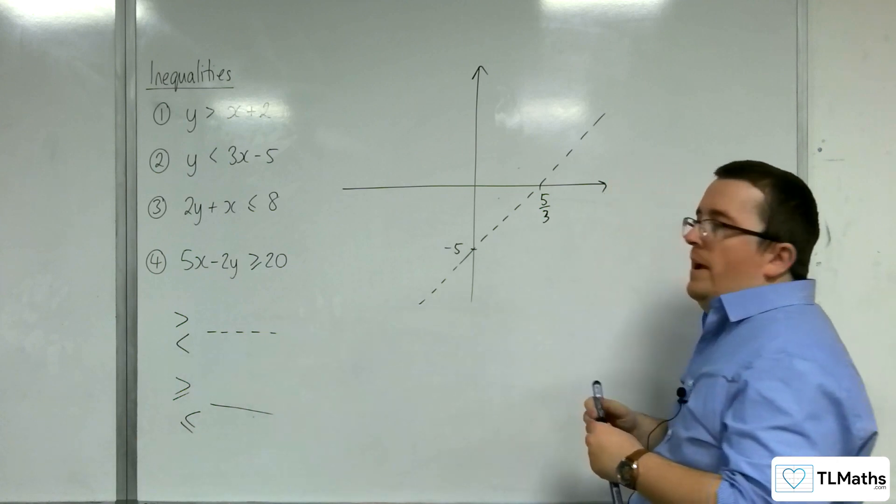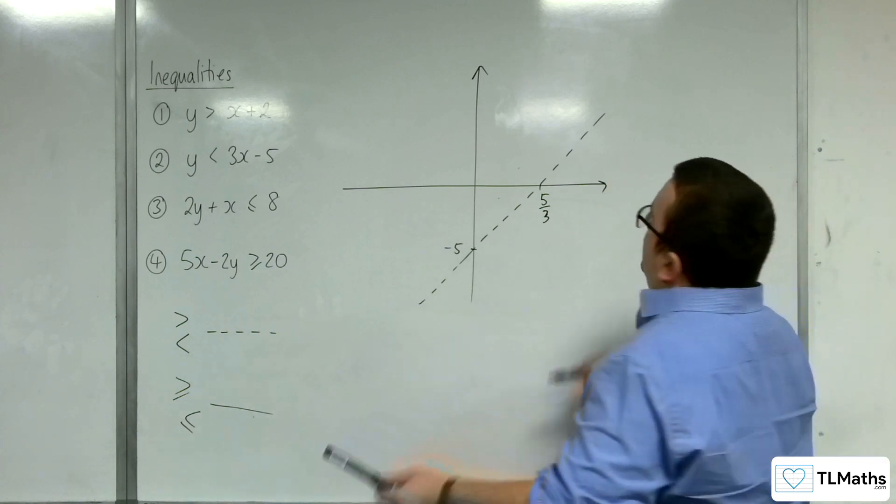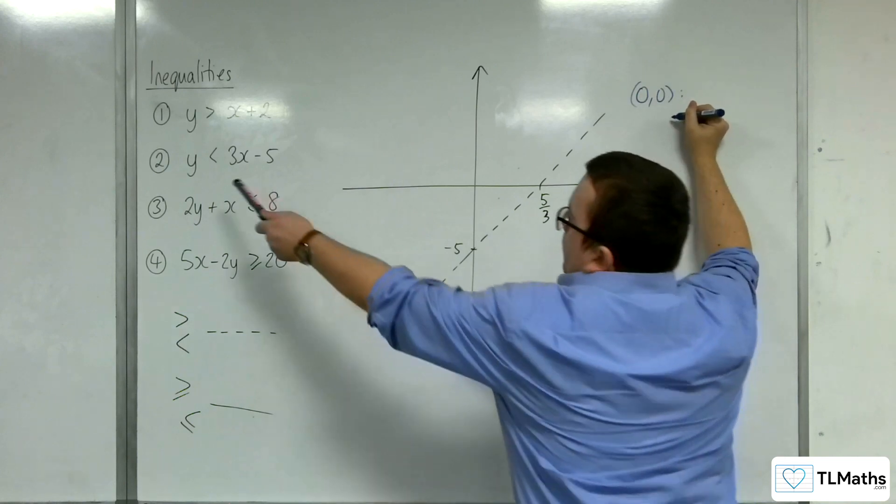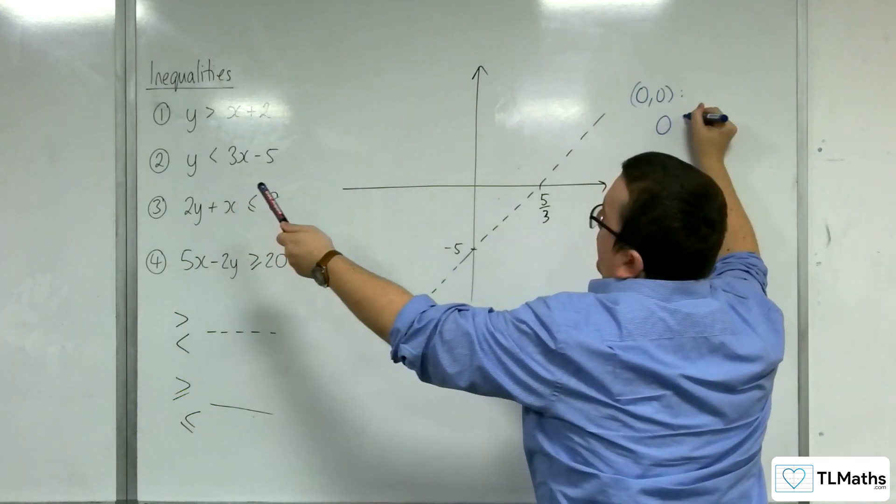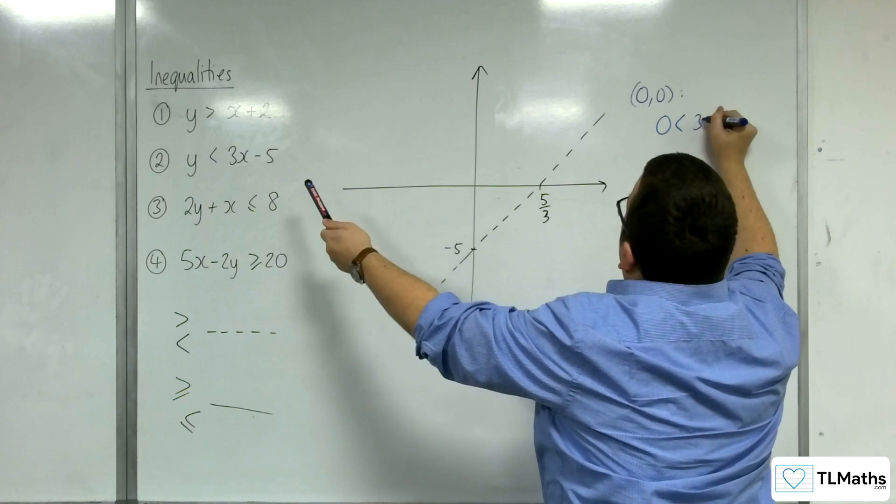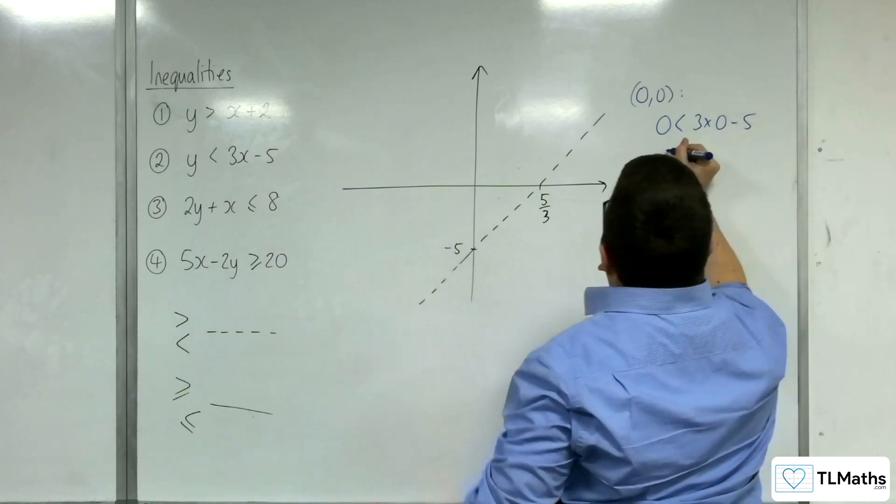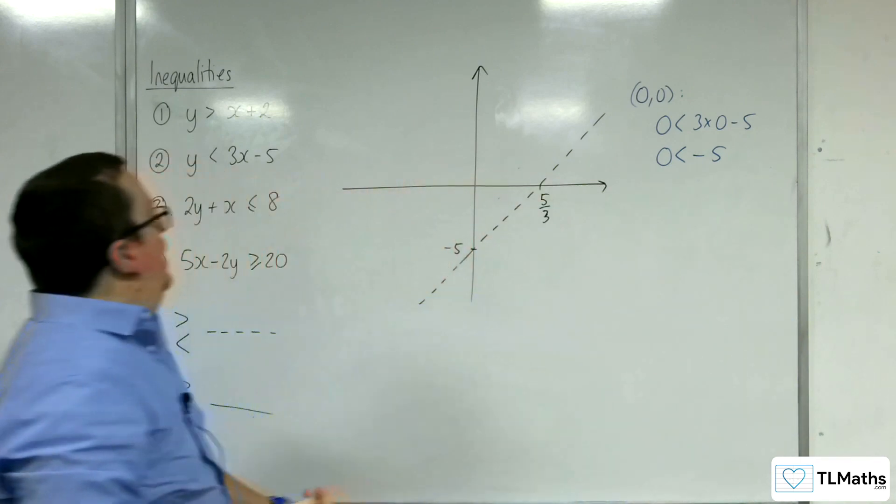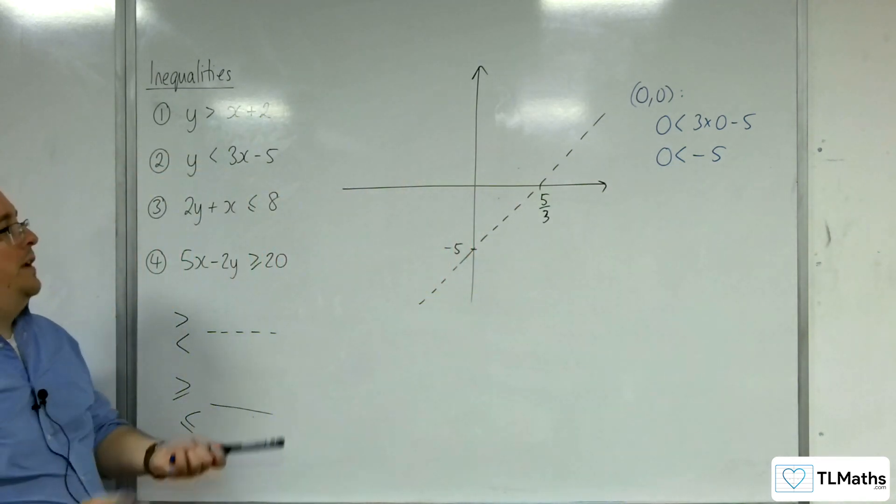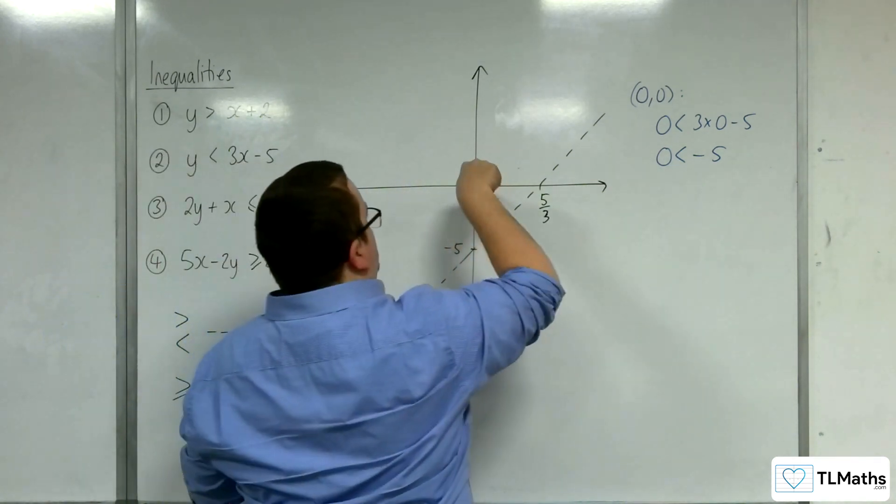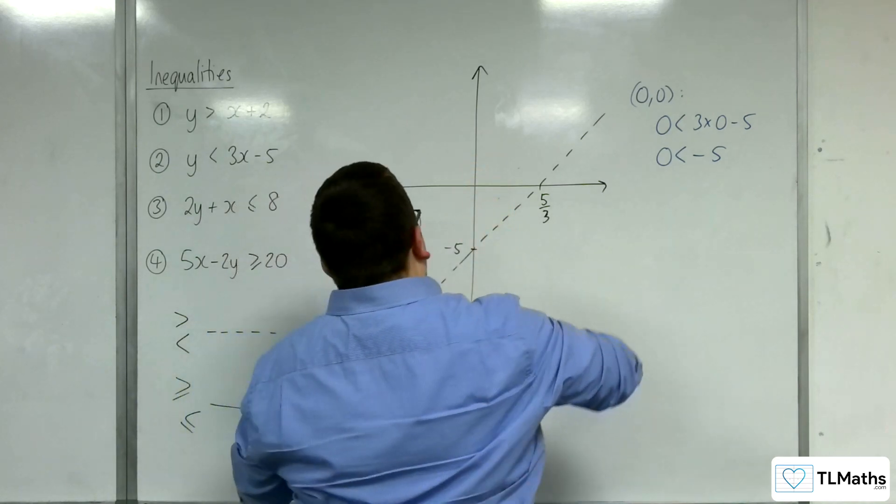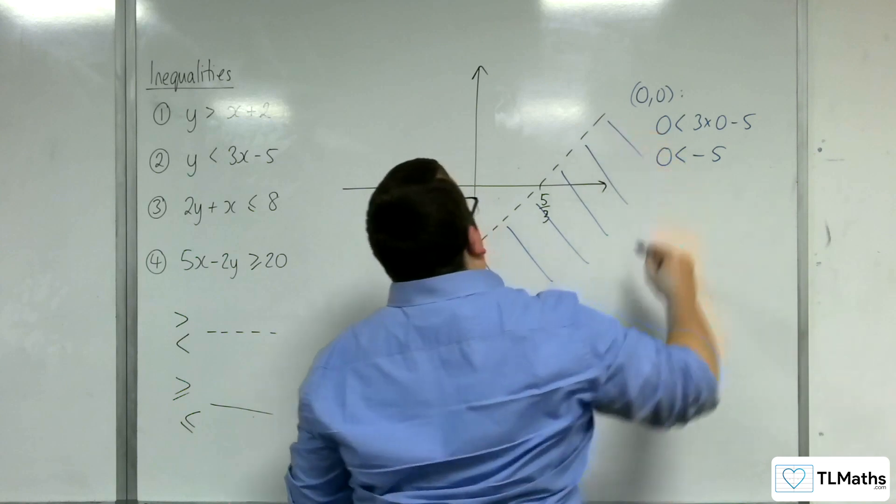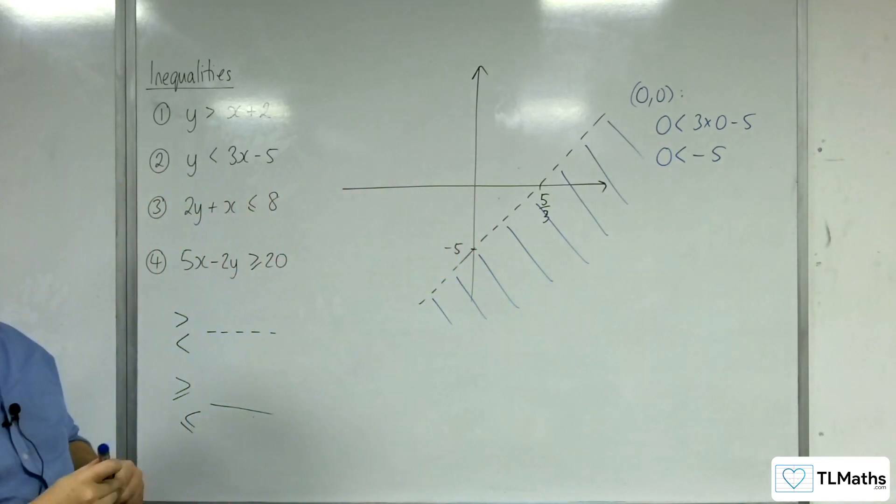So, then I want to try a point that's not on the line. So, I'll try 0,0. So, I pop it in, 0 is less than 3 lots of 0, take away 5. So, is 0 less than minus 5? Well, no, it's not. So, 0,0 is not in the region that I want. And so, the region I want is this region here.